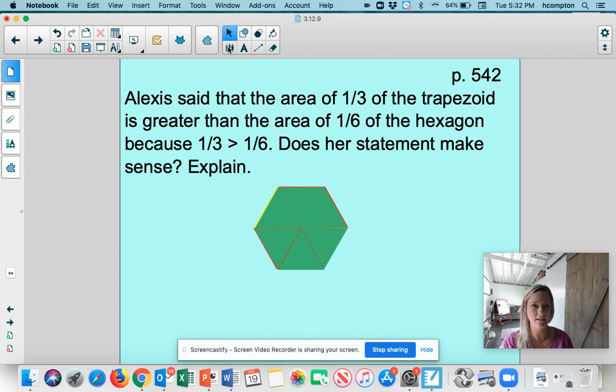All right, so let's take a look. Let's unpack this a little bit more. So I'm going to get my highlighter because who doesn't love a highlighter? I hope you're not one of those people that highlights the whole page though because then there's no reason for the highlighter. Alexis said that the area, I know the area is going to measure the inside, area of one-third of the trapezoid. Okay. So the trapezoid was that figure that was red, or we could think about it as three of the green triangles, right?